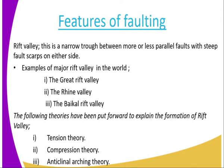The fourth one is the Rift Valley. A rift valley is a narrow trough between more or less parallel faults with steep fault scarps on either side. It is a narrow trough where fault lines are parallel. The major rift valleys we have in the world are: the Great Rift Valley, found in Africa; the Rhine Rift Valley, found in Eurasia; and the Baikal Rift Valley, also found in Eurasia.